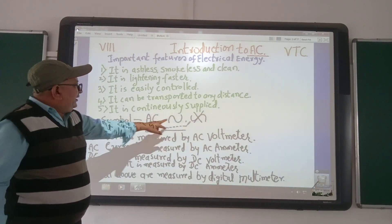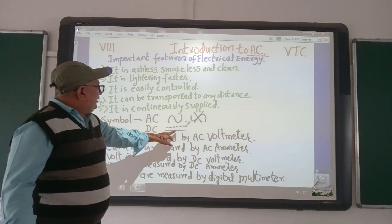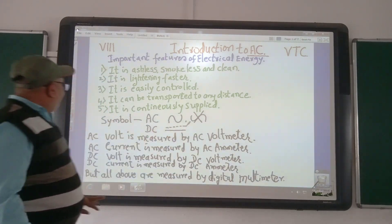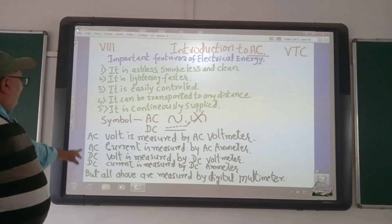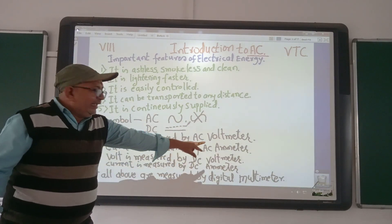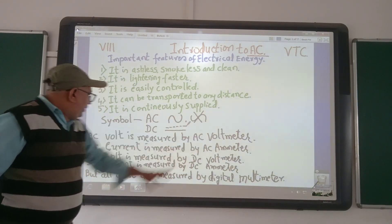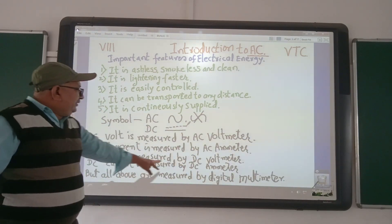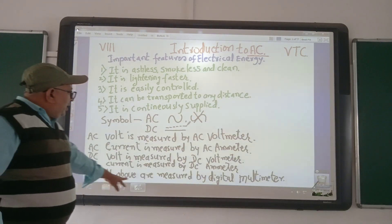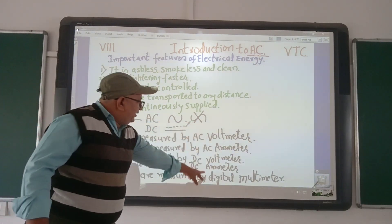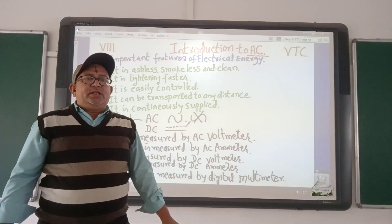The symbol of AC is this one, and the DC symbol is this one. AC voltage is measured by an AC voltmeter. AC current is measured by an AC ammeter. DC voltage is measured by a DC voltmeter. DC current is measured by a DC ammeter.